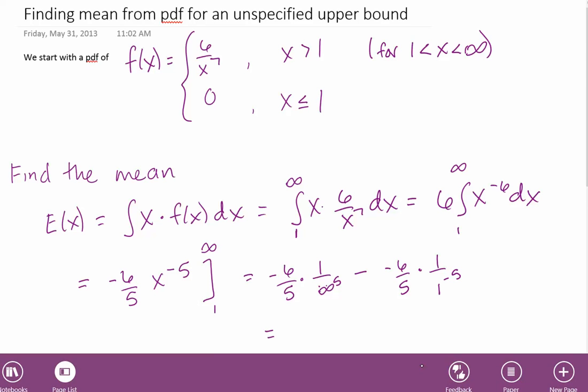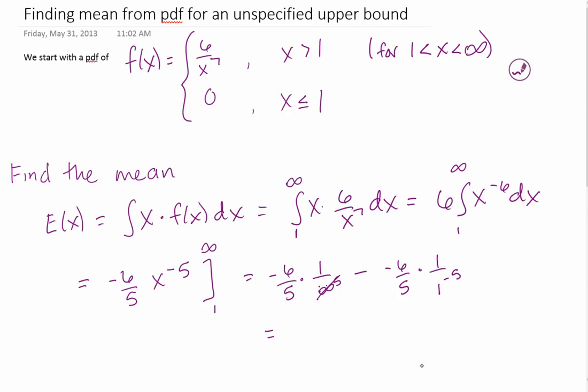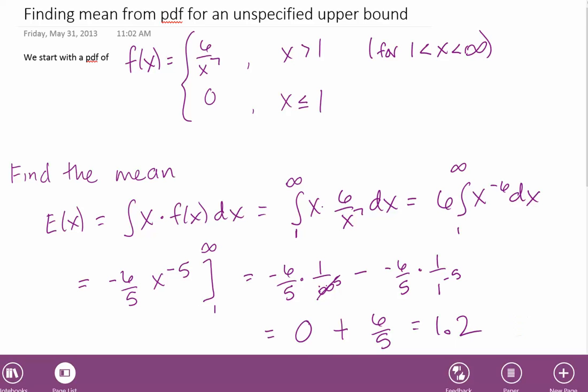Now notice infinity to the 5th power, as we approach that limit, the 1 over infinity to the 5th power is just going to give me 0. So this is 0 plus 6 fifths, which gives 1.2.